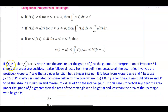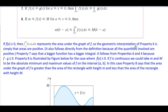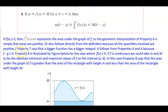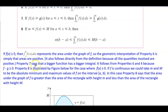If f(x) is greater than or equal to 0, then that integral represents the area under the graph of f. The geometric interpretation of property 6 is simply that areas are positive. It also follows directly from the definition because all the quantities involved are positive. Property 7 says that a bigger function has a bigger integral. It follows from properties 6 and 4 because f minus g is greater than or equal to 0.